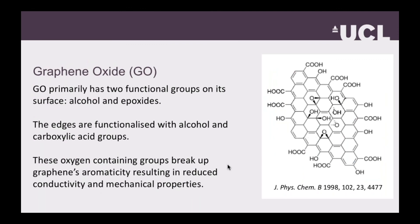First, graphene oxide. Hopefully we all know what graphene is and why it's got so much attention lately. Graphene oxide is its derivative. It tends to be a lot easier to synthesize and a lot easier to handle. So you take graphite or graphene and put it in a highly oxidative environment, and you end up with a bunch of oxygen-containing functional groups.